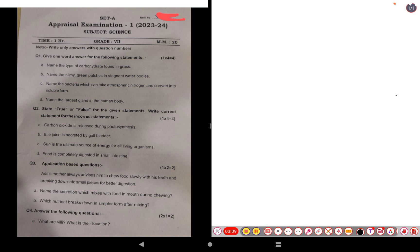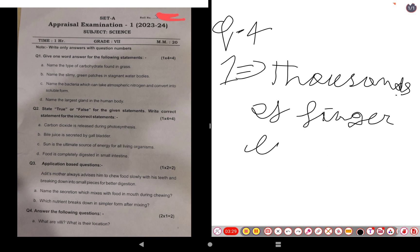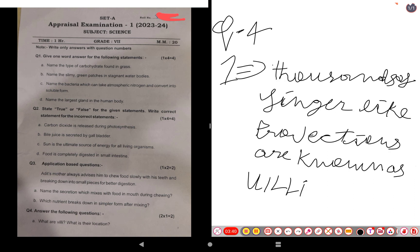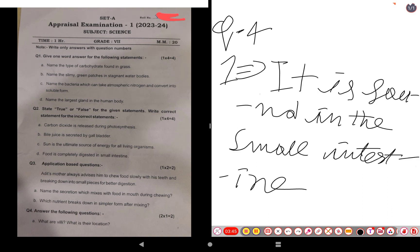Question four: what are villi, what is their location? The answer for this question is: thousands of finger-like projections are known as villi. It is found in the small intestine.